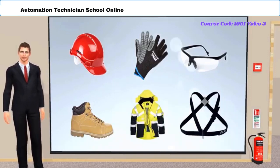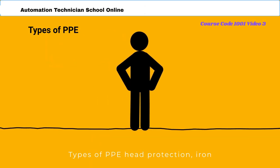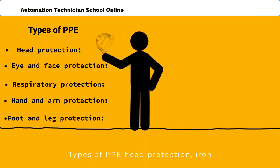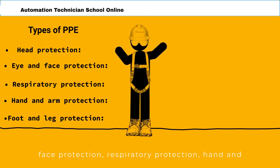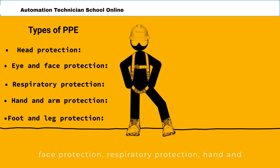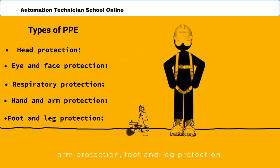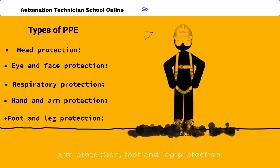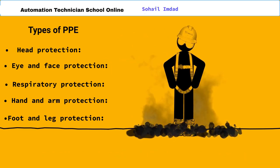Types of PPE: Head Protection, Eye and Face Protection, Respiratory Protection, Hand and Arm Protection, and Foot and Leg Protection.